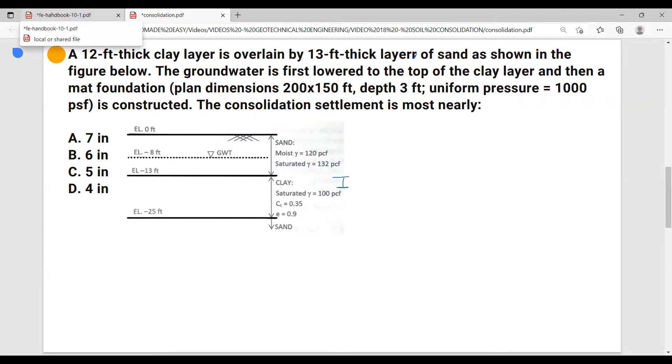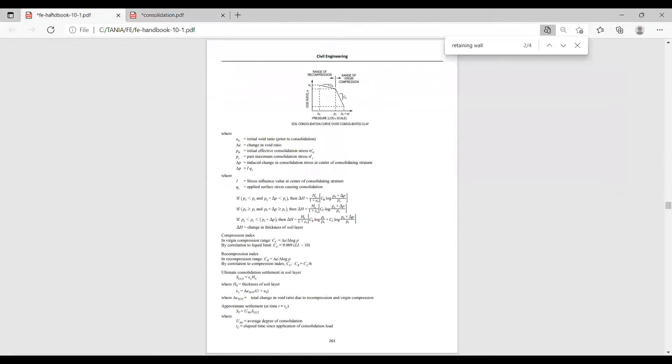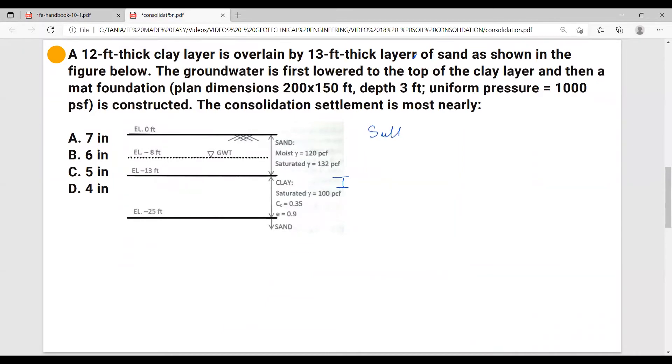Let's go and look at our formulas provided by the FE handbook. The formula for the consolidation settlement, ultimate consolidation settlement in soil layer is epsilon v times hs, where hs is the thickness of the soil layer, and epsilon v equals delta e total over 1 plus e0. So we have s ultimate equals delta e times hs over 1 plus e0.